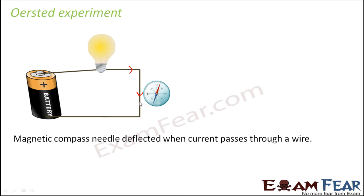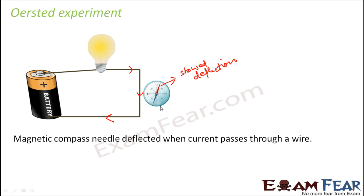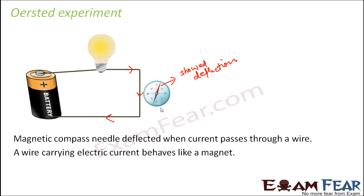As the current passed through the wire, the needle showed deflection, proving that a magnetic effect has been produced by the current. This observation showed that a wire carrying electric current behaves like a magnet — something nobody had expected or imagined. A wire through which current is flowing is equivalent to a magnet, behaving in the same way as a magnet.